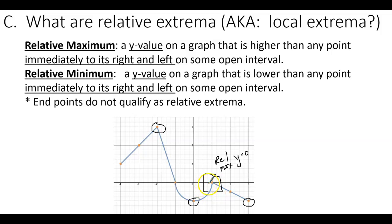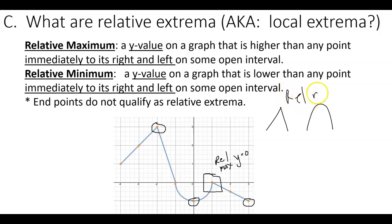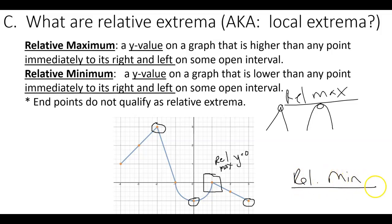A better way to identify a relative maximum visually: it could be the top of a cusp or the top of a curve. Both of those points would be considered relative maxima. Relative maxes can look like that — I can circle the points at the very top. Relative minima could look like the bottom of a curve or the bottom of a cusp.